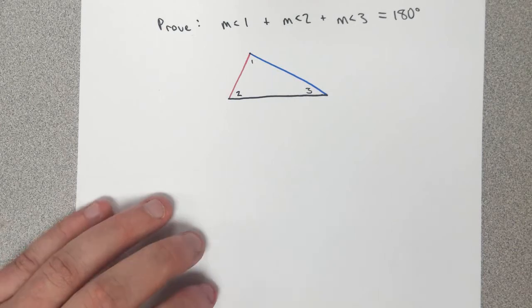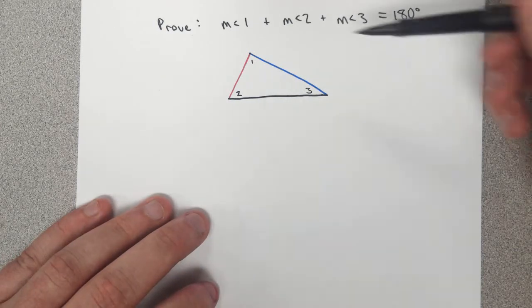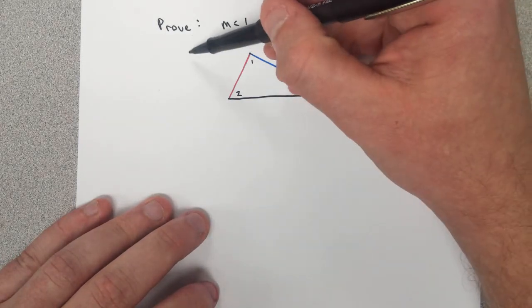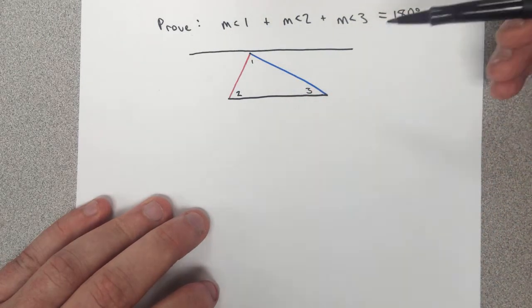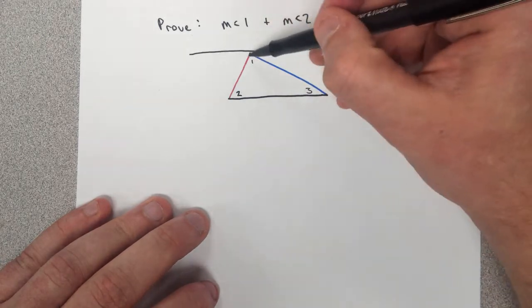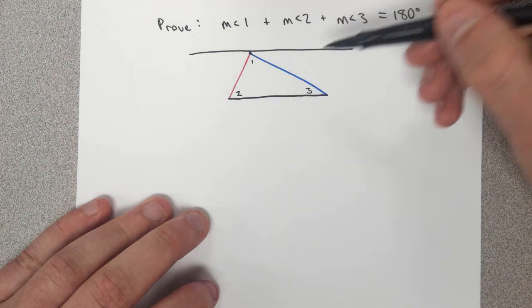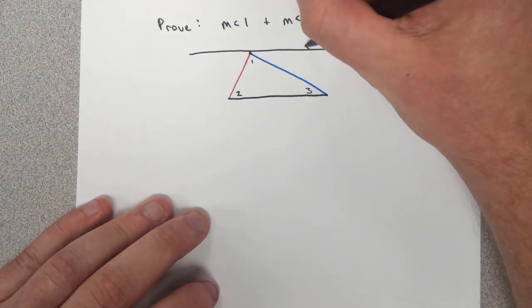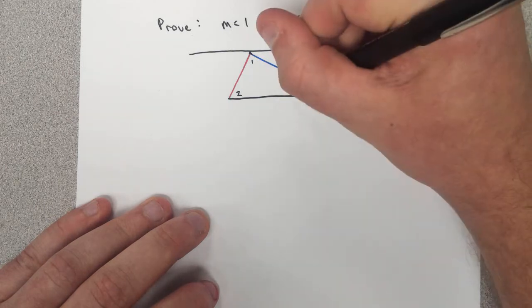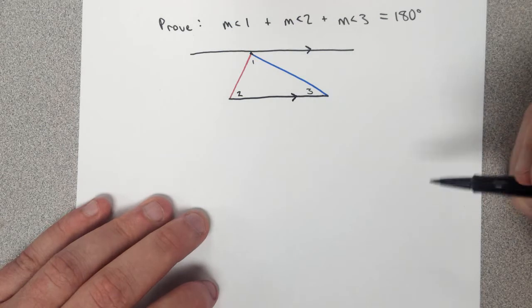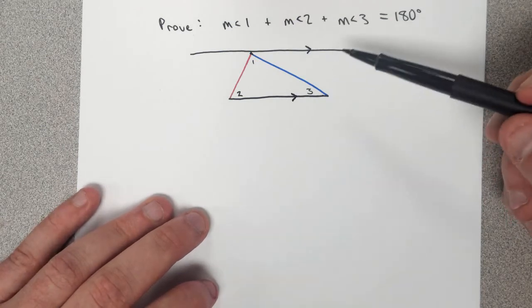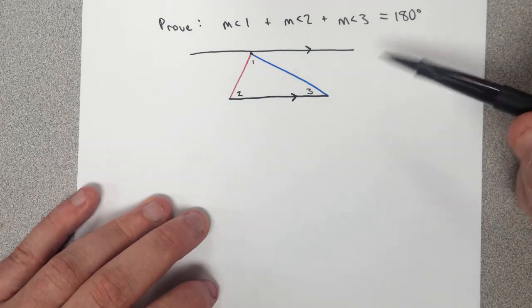So in order to do this proof we need to do a quick construction. What we need to do first is we need to construct a line that runs through the vertex of this triangle up here and is parallel to the base of the triangle. So once we construct that line, this is what we need in order to complete the proof.